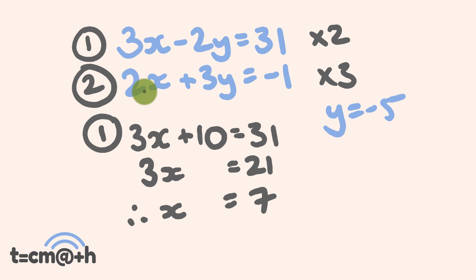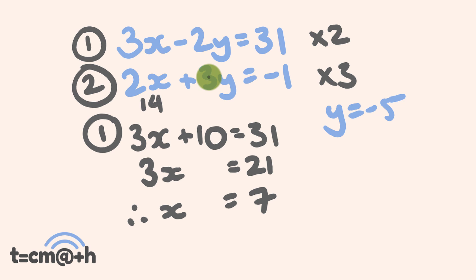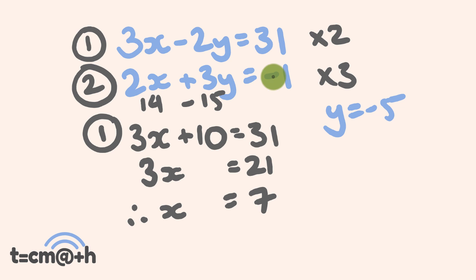Let's just check this out in equation 2. x is equal to 7, so 2 times 7 is equal to 14. 3 times negative 5 is minus 15. 14 minus 15 is equal to negative 1. We have the correct answer — a really good thing to keep checking.